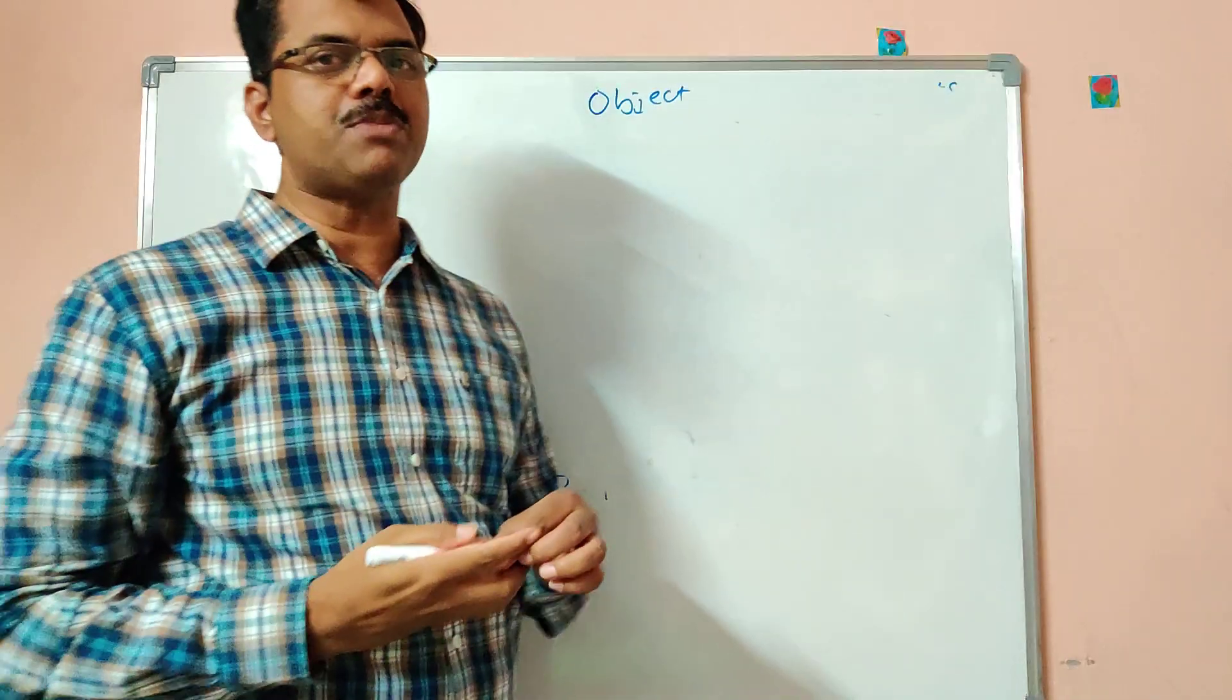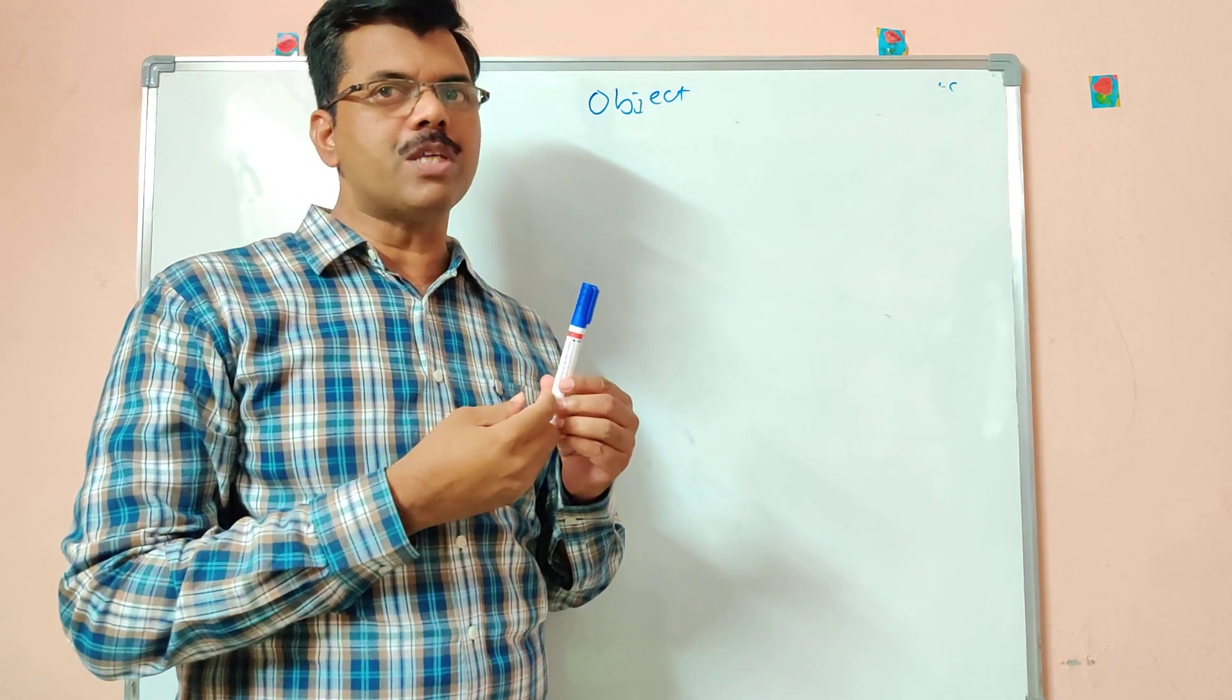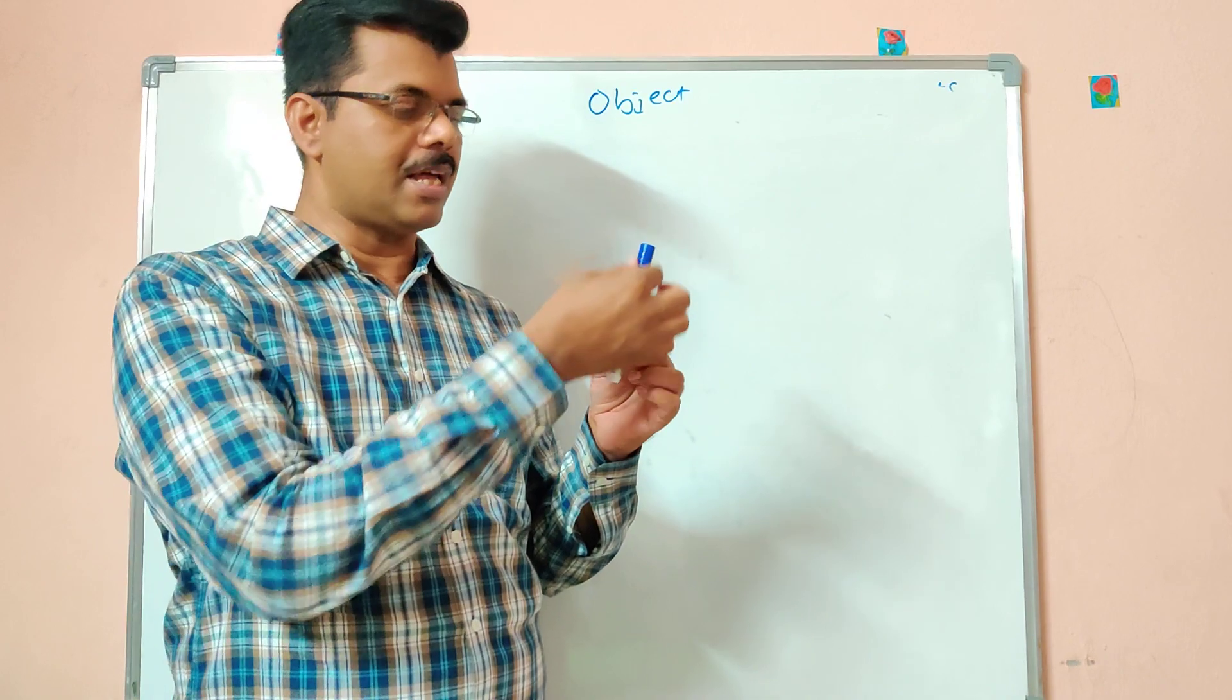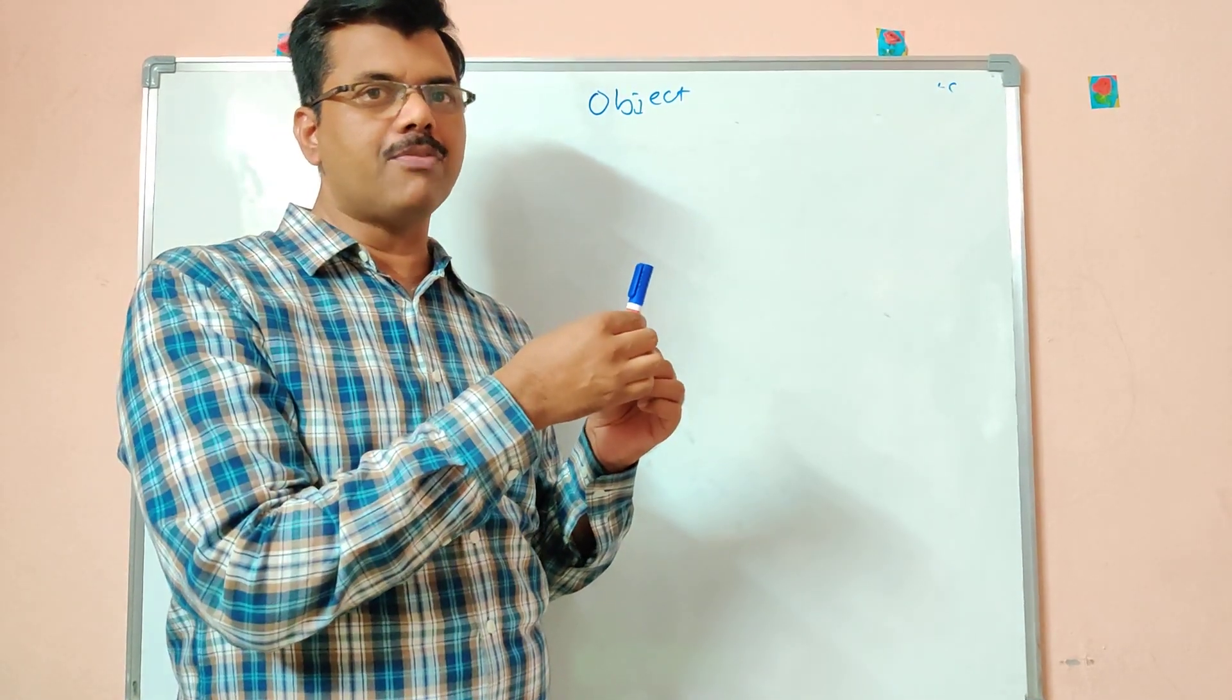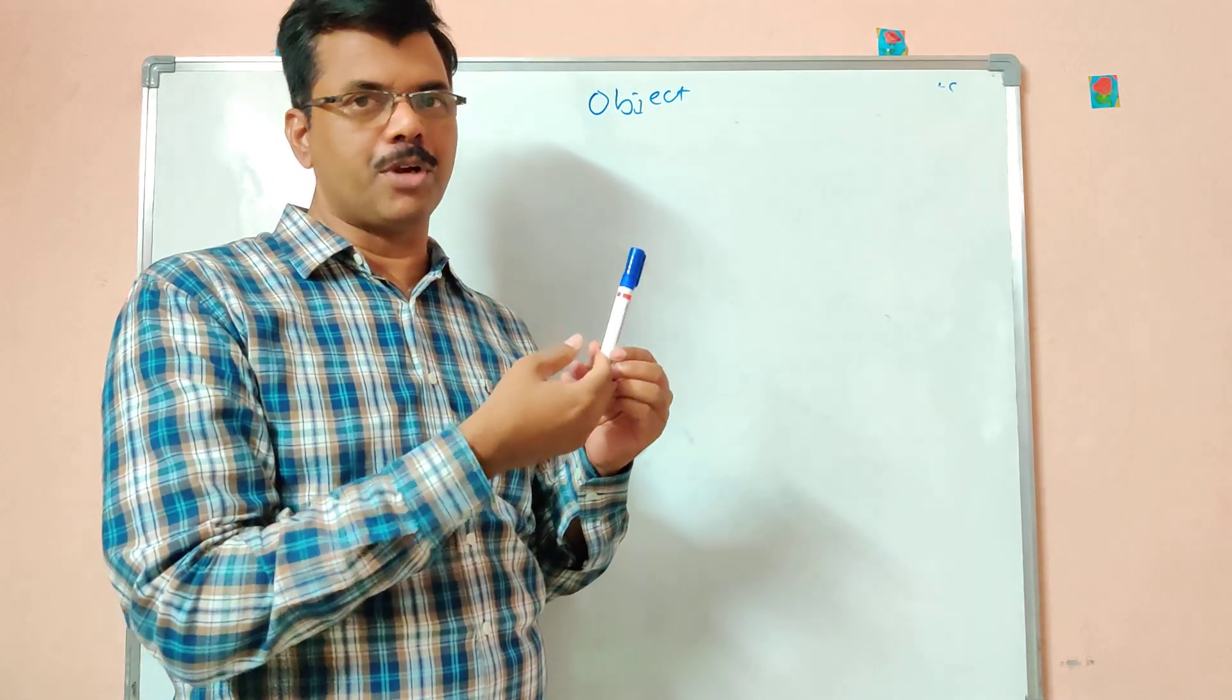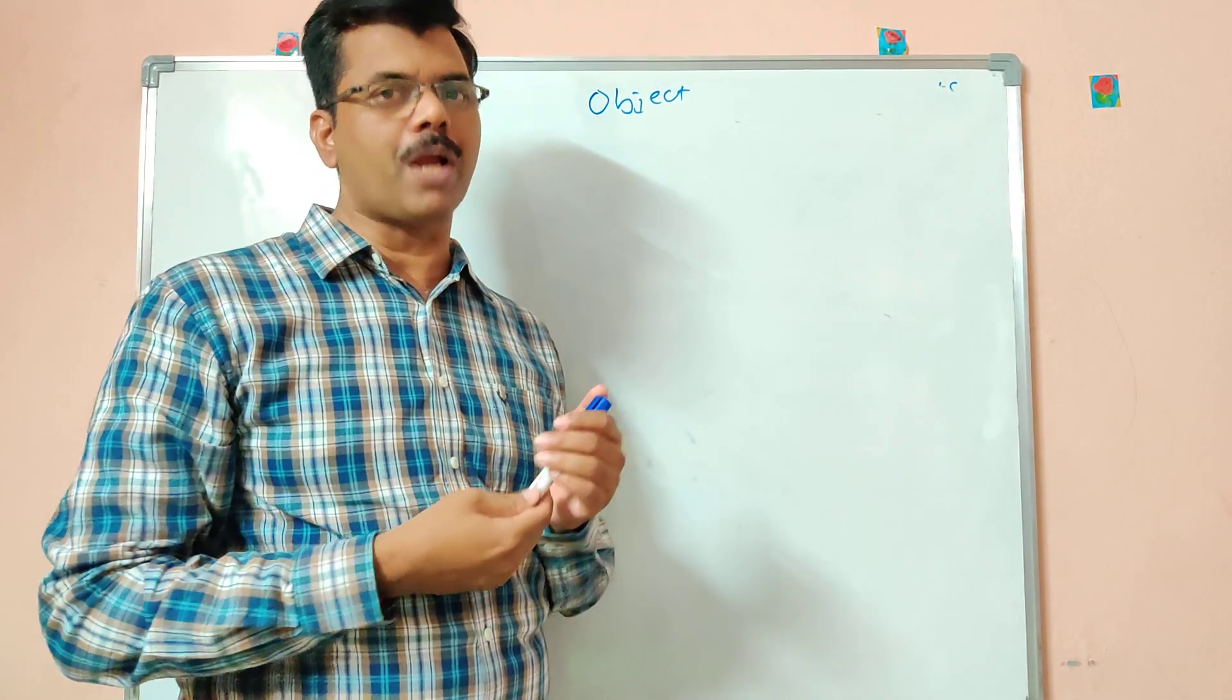Like example, if you consider this marker only. So when you consider this marker, we can give some properties like it's having the dimensions. The four color is like white. And the color of the pen is blue. And the price is some 25. And the made is by cameling. So these are some properties.